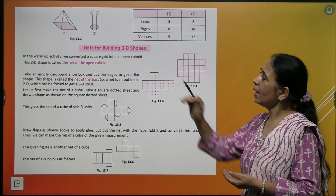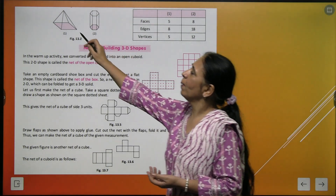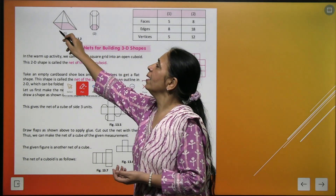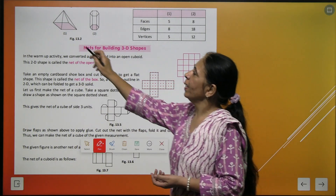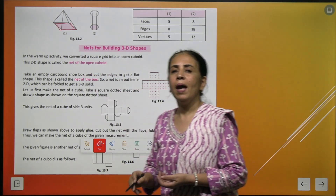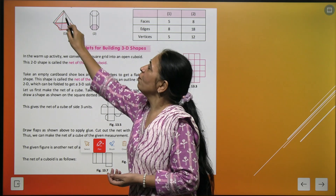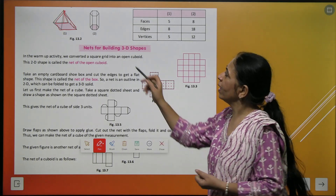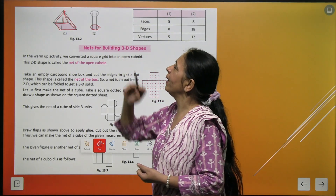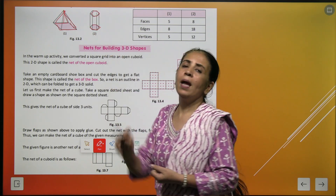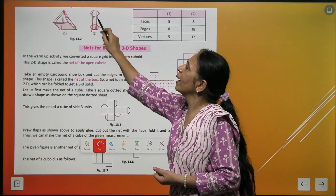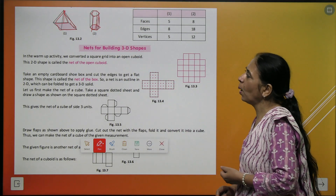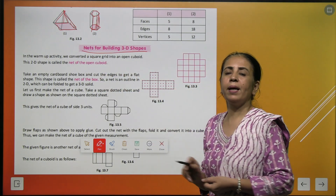Now we move further. This figure is pointed at the top and we call it a pyramid. A pyramid can have a rectangular base. There is another figure where the base is a pentagon, and rectangles join it together — we call such figures a prism.